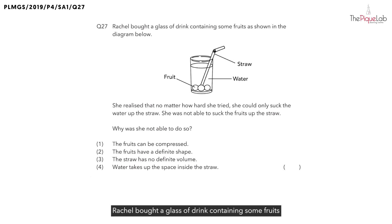Question 27. Rachel bought a glass of drink containing some fruits as shown in the diagram below. She realized that no matter how hard she tried, she could only suck up the water up the straw. However, she was not able to suck the fruits up the straw. So, in this question, they want you to explain why was she not able to do so.